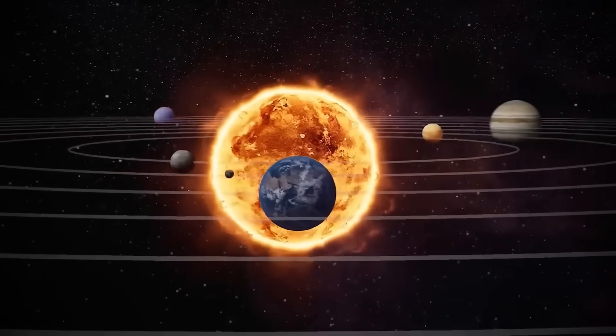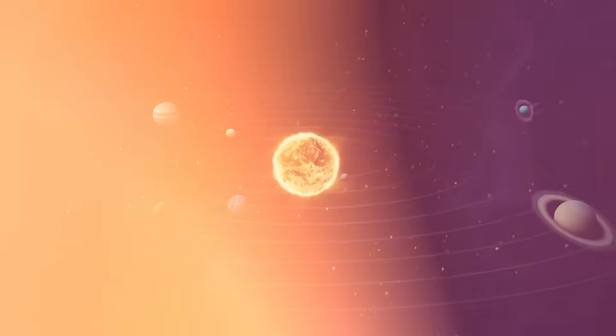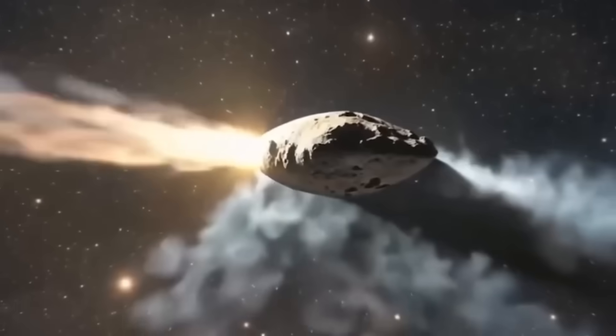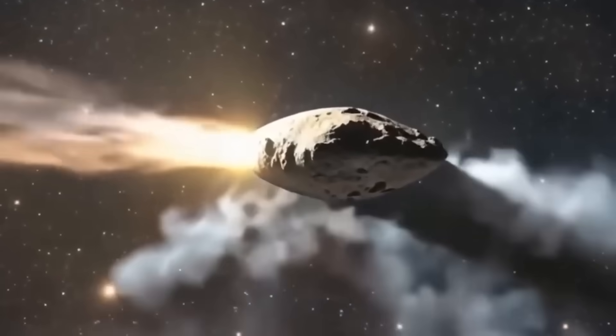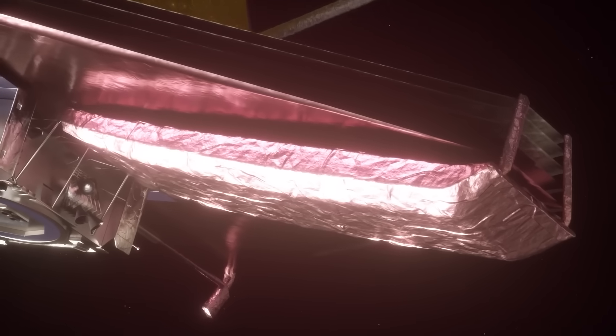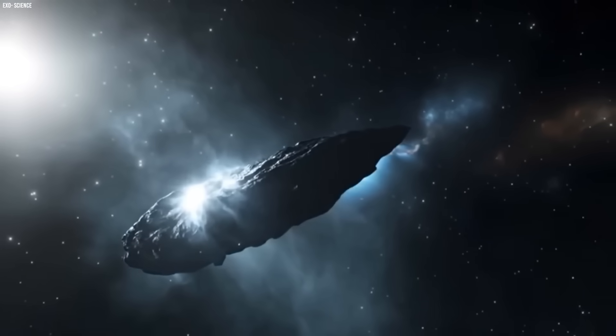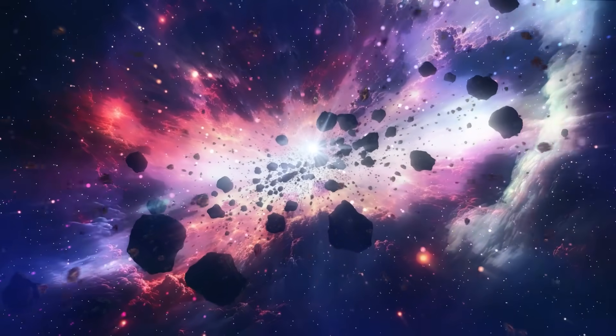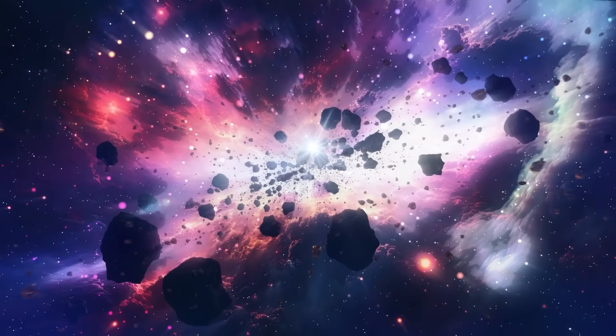In the long, anxious months while 3i Atlas hid behind the sun, astronomers told themselves it would reappear as comets always do - dim, dusty, unchanged. But when Webb locked onto it again, the brightness spike shattered every model. Natural comets flare, yes, but only in bursts. They erupt chaotically, inconsistently, violently. 3i Atlas did none of that.